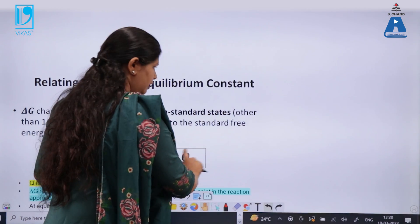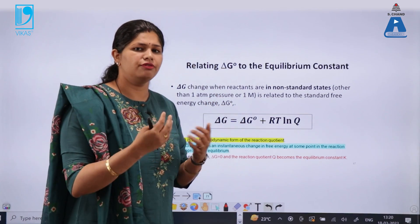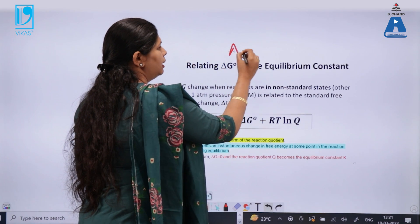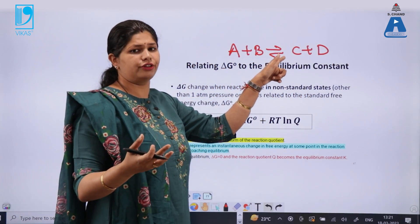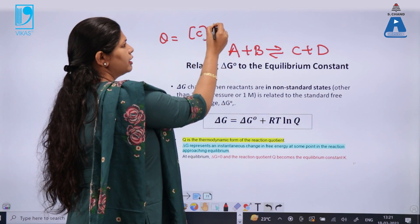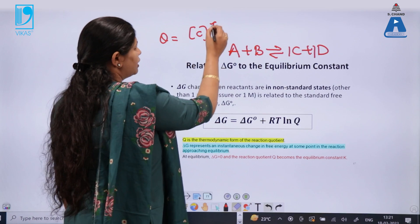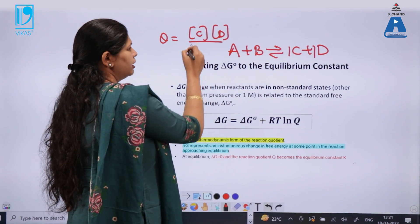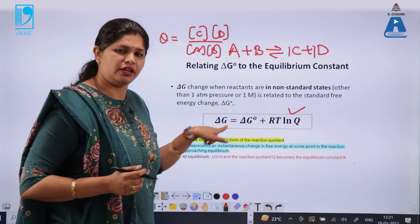So far, we have studied Gibbs free energy and the electrochemical cell separately. Now, what is the relation between the two? To understand this, we must know the relation between Gibbs free energy and the equilibrium constant. For a reaction A + B ⇌ C + D, equilibrium is established after a period of time. Before that, we write the reaction quotient Q, which is the concentration of products divided by the concentration of reactants. This is the relation between Gibbs free energy and the reaction quotient.